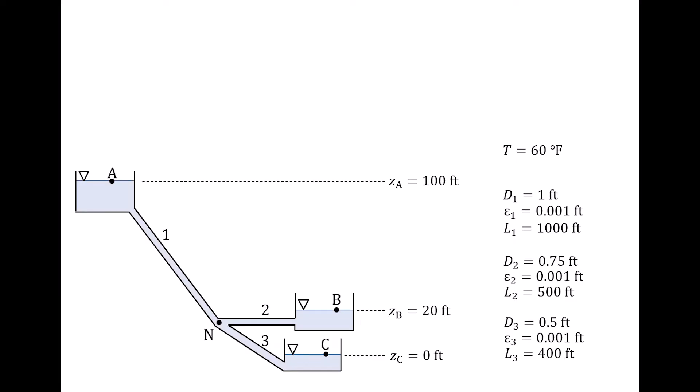Pipe 1 has a diameter D of 1 foot and a length L of 1,000 feet. Pipe 2 has a diameter of 0.75 feet and a length of 500 feet. Pipe 3 has a diameter of 0.5 feet and a length of 400 feet. All three pipes have an absolute roughness epsilon of 0.001 feet. We assume that reservoirs are so large that the water level doesn't change significantly in time, and the elevation at the top of each reservoir is known. The elevation of reservoir A, ZA, is 100 feet higher than the elevation of reservoir C, ZC, and the elevation of reservoir B, ZB, is 20 feet higher than the elevation of reservoir C.